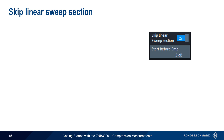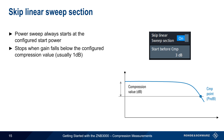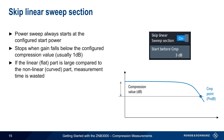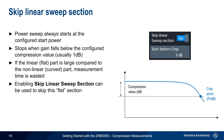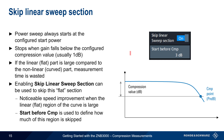The last topic to cover is the Skip Linear Sweep Section feature. The power sweep performed at each frequency point always begins at the configured start power and stops when the measured gain falls below the configured compression value — usually P1dB. If the linear or flat part of the trace is large compared to the non-linear part, time will be wasted measuring the uninteresting portion. The Skip Linear Sweep Section function can skip over this flat section, notably decreasing overall measurement time. The value entered for Start Before Compression defines how much of this flat region is skipped.